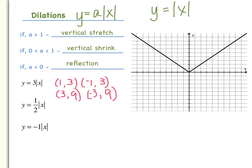In our first example, y equals 3 times the absolute value of x. I have four ordered pairs. If x is 1, the absolute value of 1 is 1, times 3 equals 3, so y is 3. If x is negative 1, the absolute value is 1, and 1 times 3 is 3. I did the same for x equals 3 and x equals negative 3. Once plotted, you draw your line through the points. With an a value greater than 1, the graph has gotten narrower — that's called a vertical stretch.